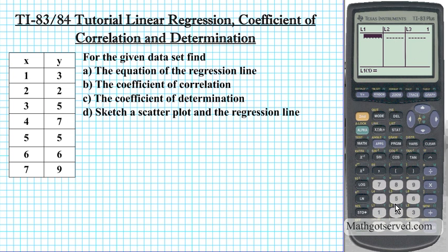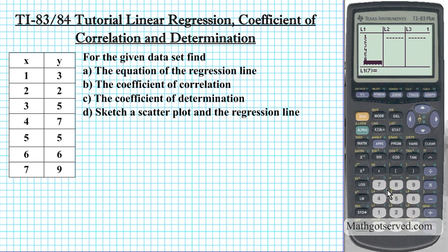For the x values, we have 1 — enter — and then it goes down to the next cell, to the second row of the first column — 2, enter, 3, enter, 4, enter, 5, enter, 6, enter, 7, enter.